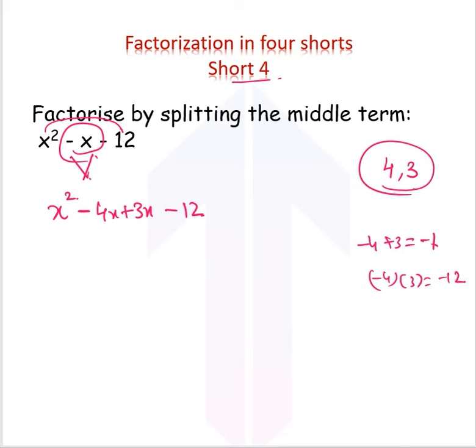Now I have two terms here and two terms here. I can take the common terms outside: x times x minus 4, plus here I have 3 common into x minus 4. So x minus 4 is again common throughout, that goes out into x plus 3. This is how we can factorize by splitting the middle term.